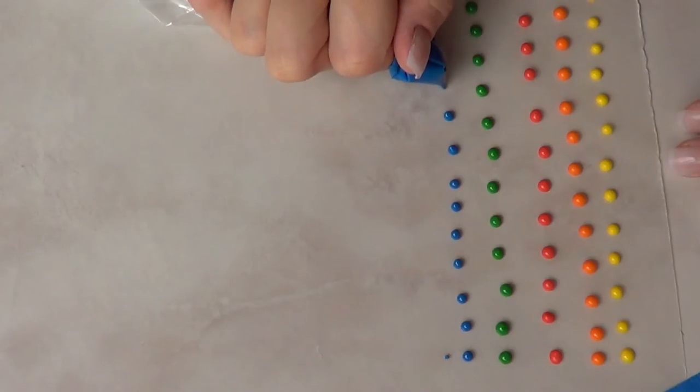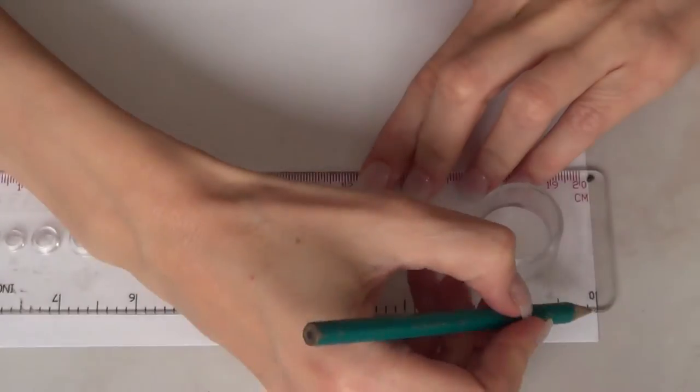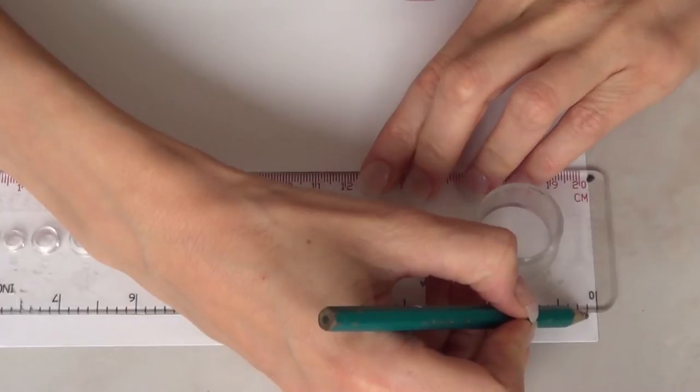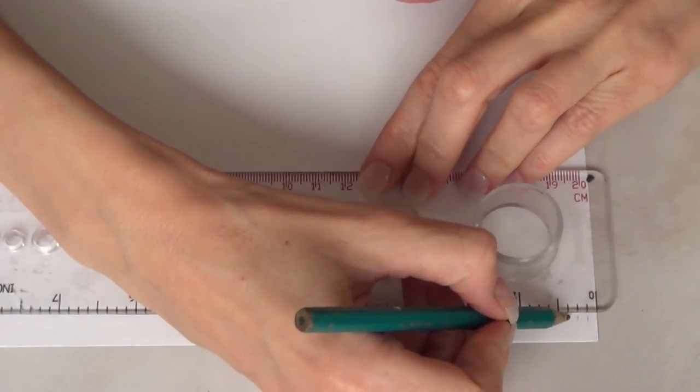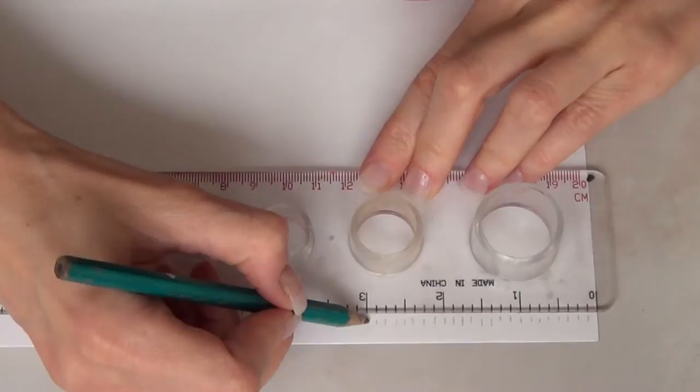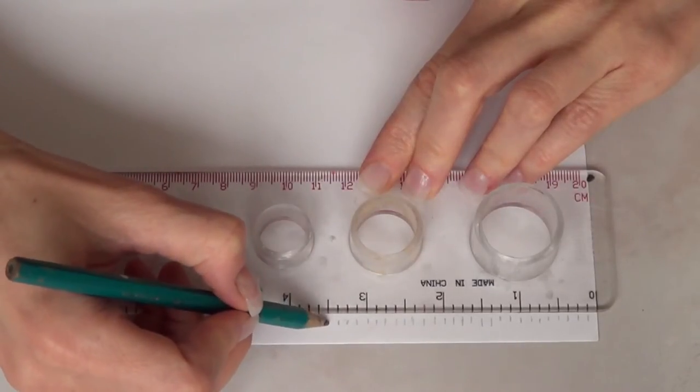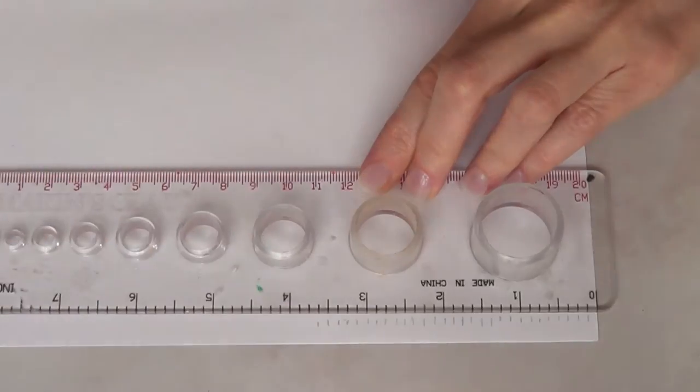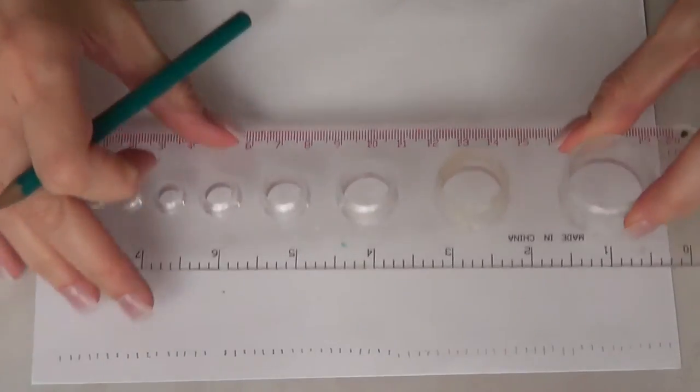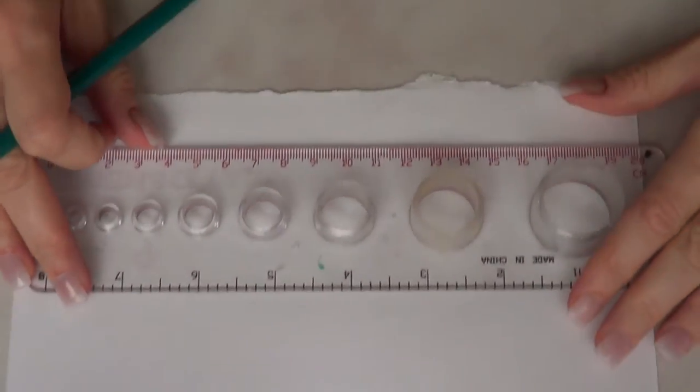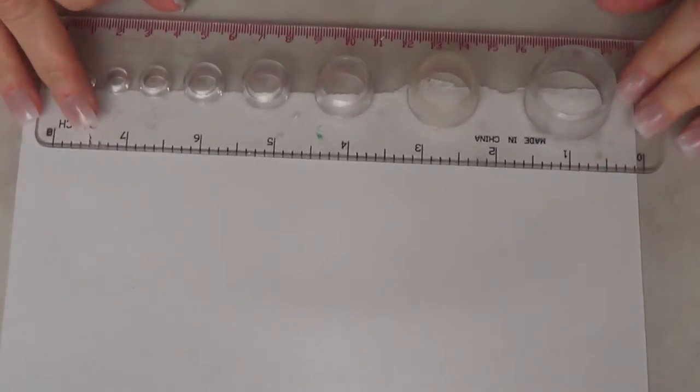This would be much easier if you have like a squared notebook. I didn't have one and I wasn't going to purchase one just for one paper that I need, so I just pretty much made my own. I'm just going to my paper and just putting my ruler on the top and just marking where I wanted my lines to be.